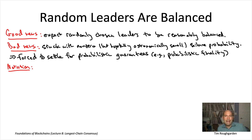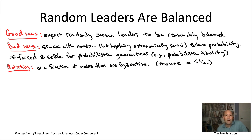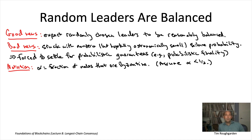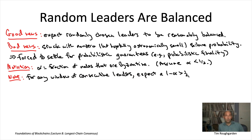Alpha is going to denote the fraction of nodes that are Byzantine. We're really doomed unless alpha is less than 50%, so we need at least 51% honest nodes for any hope of a balancedness property. Given that alpha is less than one-half, consider any sequence of consecutive leaders — say 100 leaders in a row. With 49% Byzantine and 51% honest nodes, we expect a strict majority of these 100 to be honest: typically 51 honest and 49 Byzantine.